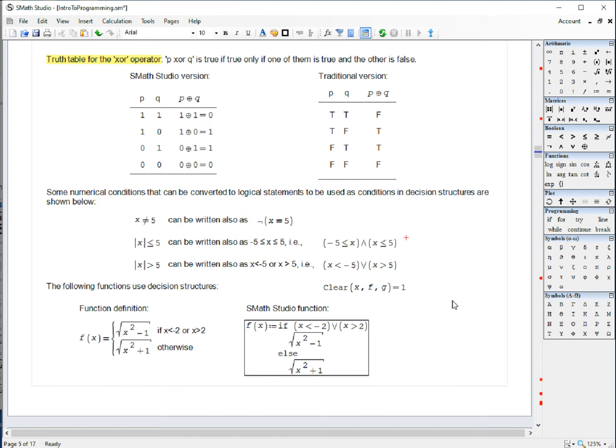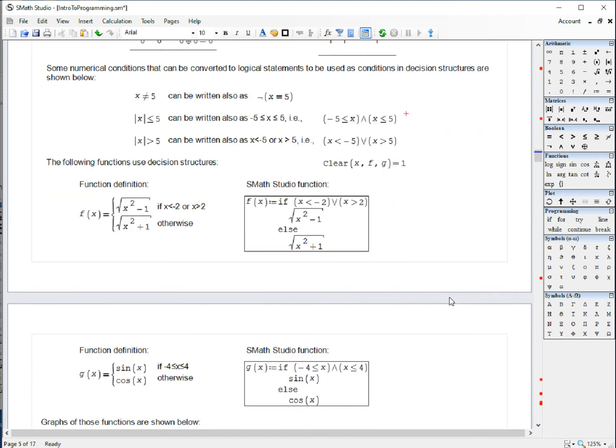For example, if you want to create the IF statement corresponding to this piecewise function, you start by saying, okay, I'm going to type F of X, sorry, F of X, spacebar, colon.